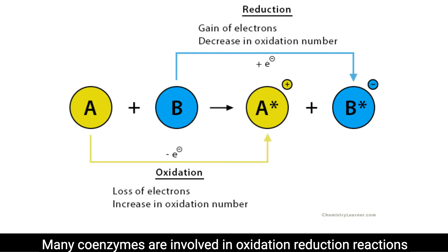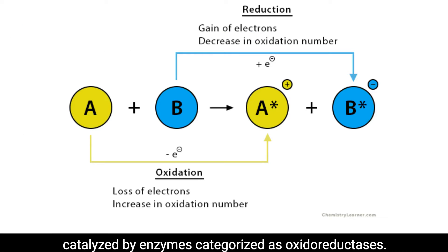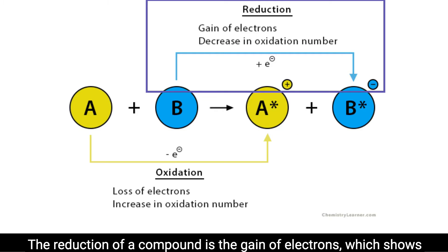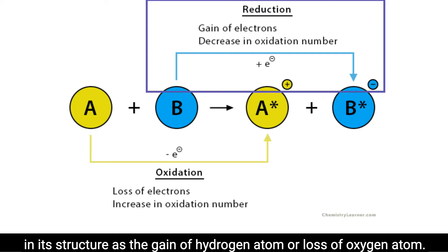Many coenzymes are involved in oxidation-reduction reactions catalyzed by enzymes categorized as oxidoreductases. When a compound is oxidized, it loses electrons. As a result, the oxidized carbon has fewer hydrogen atoms or gains an oxygen atom. The reduction of a compound is the gain of electrons, which shows in its structure as the gain of hydrogen atom or loss of oxygen atom.